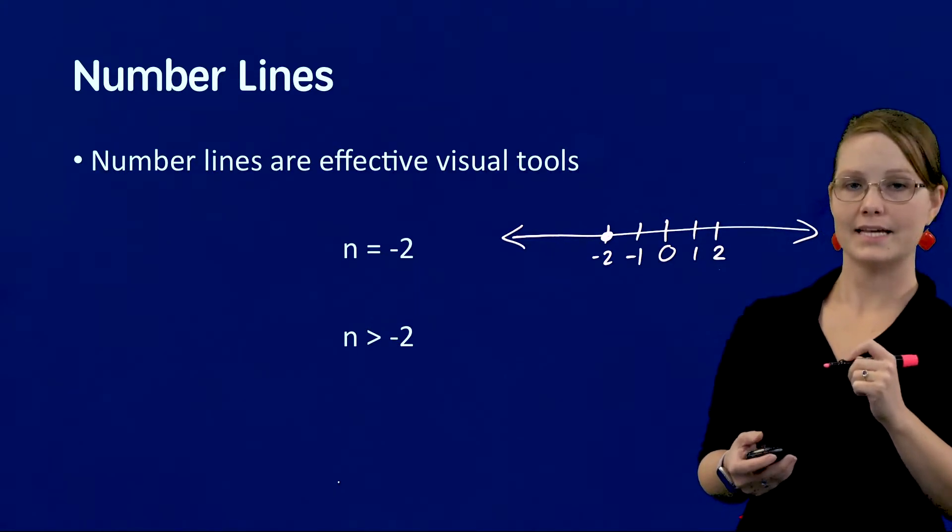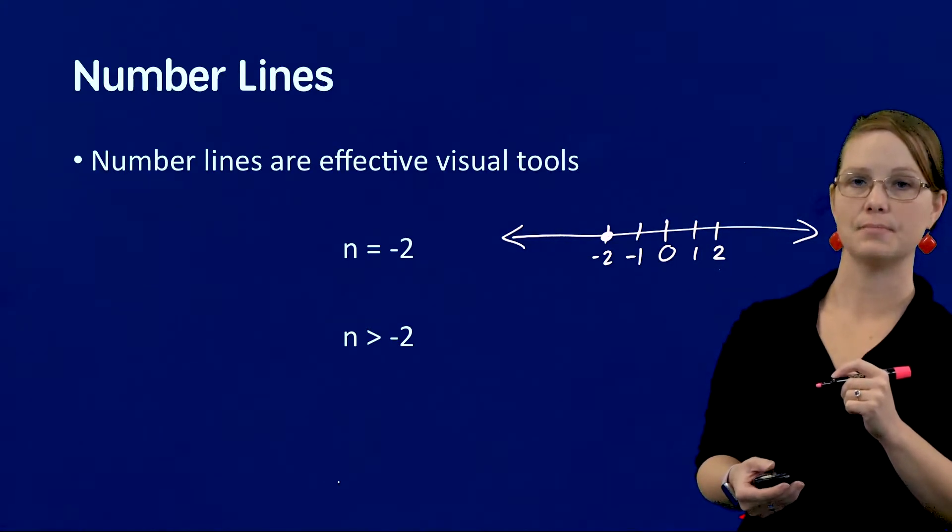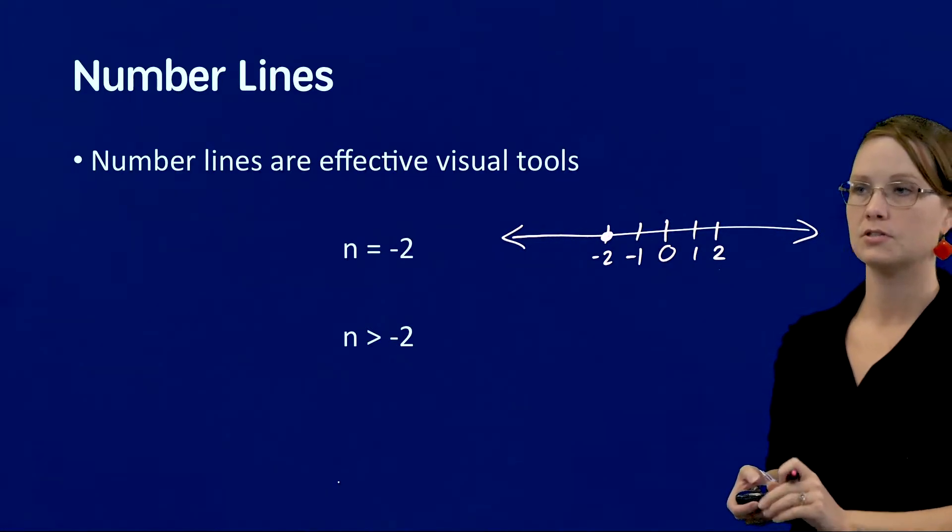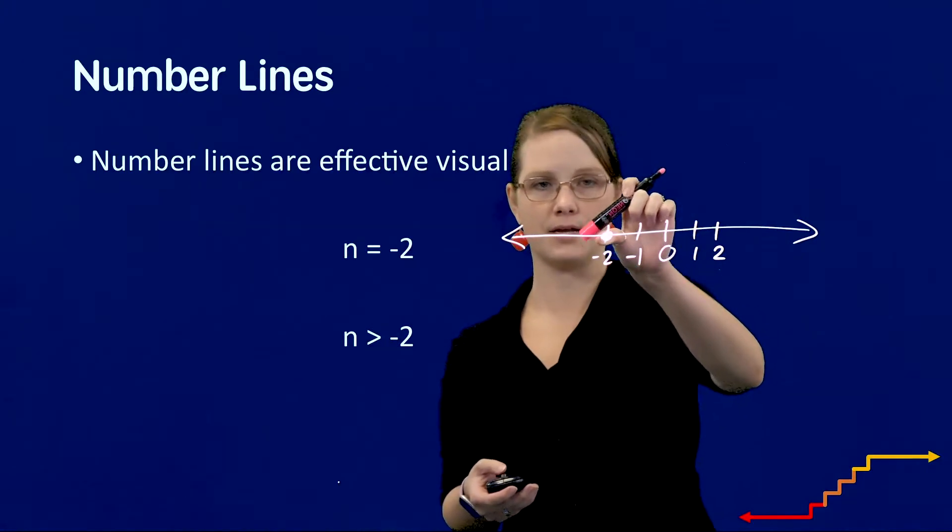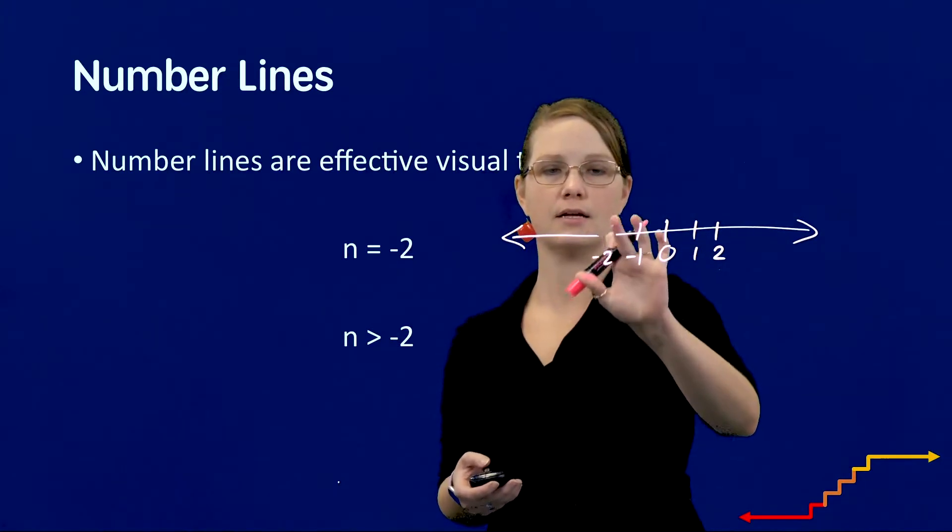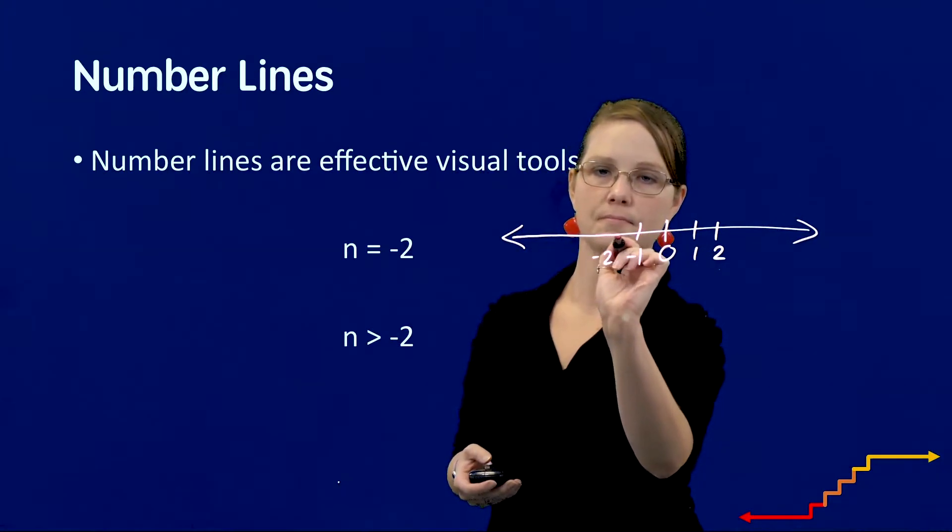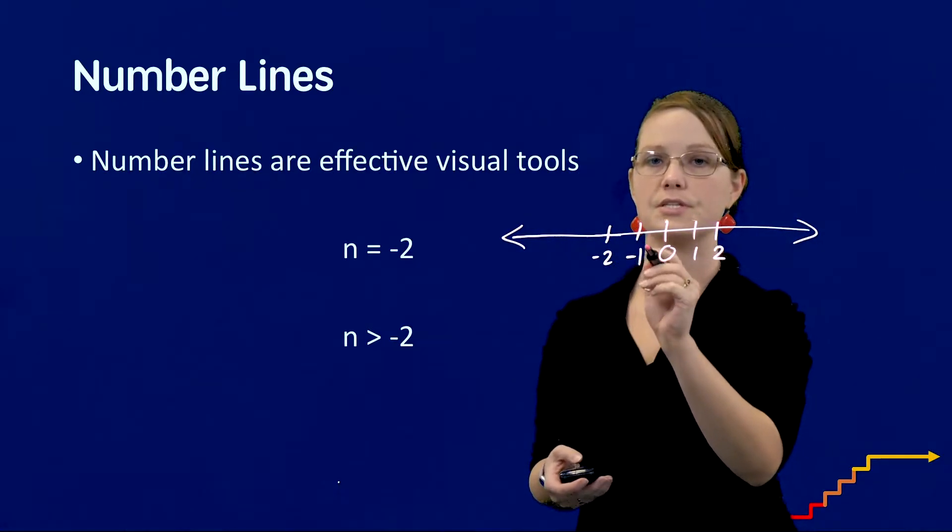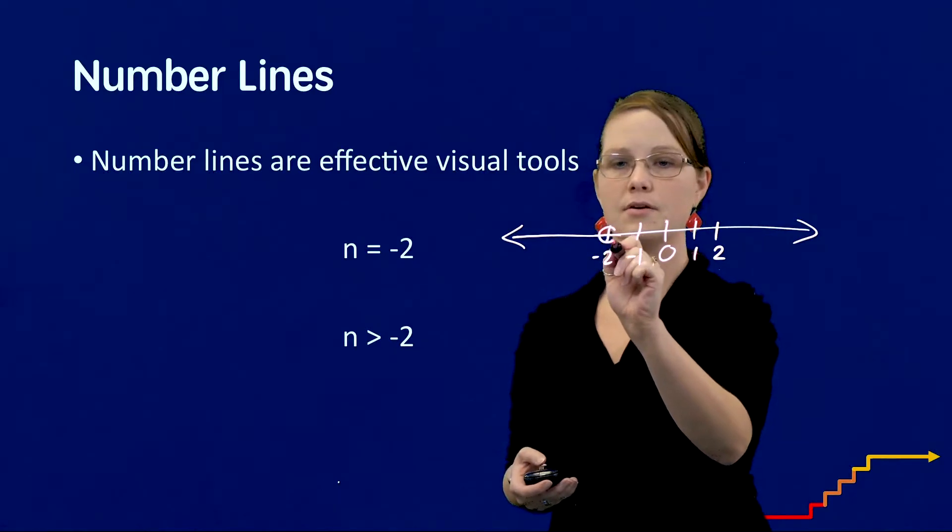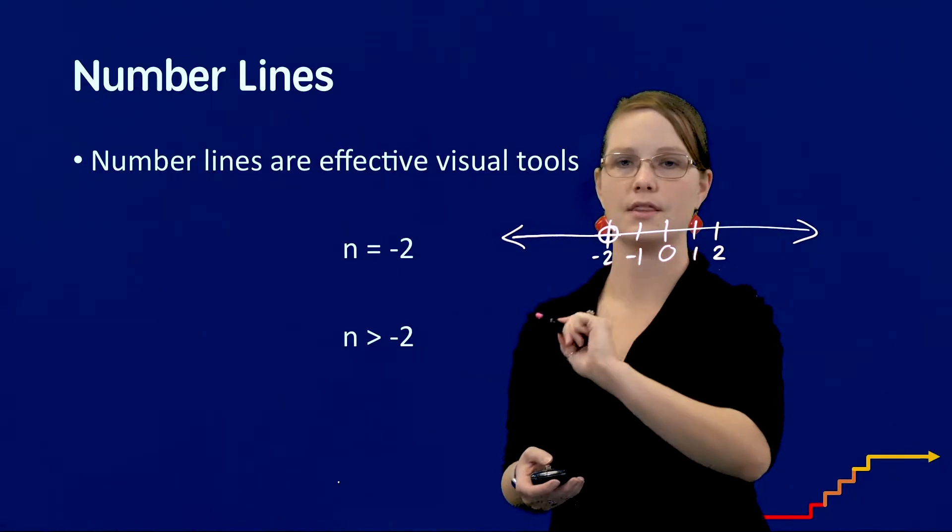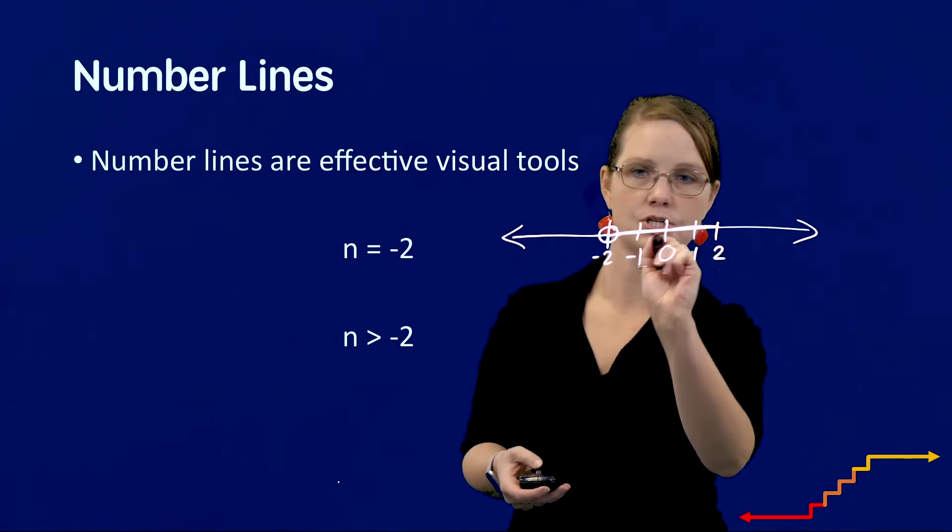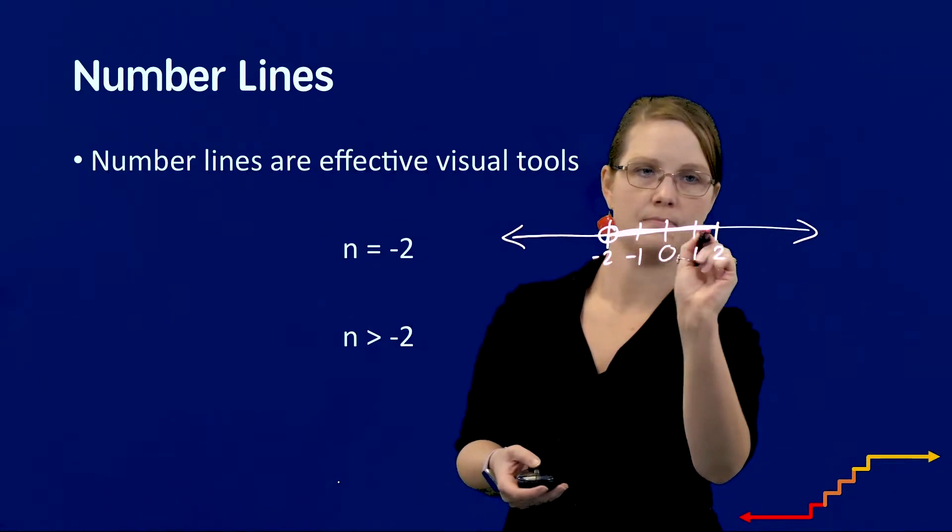I can then expand students' understandings by showing the equation n is greater than negative 2. So I'm going to use the same number line but I'm going to remove my dot right there. And now I want to show students that n is going to be anything greater than negative 2. I'm going to start there and I'm really going to try and shade in my arrow going that way.